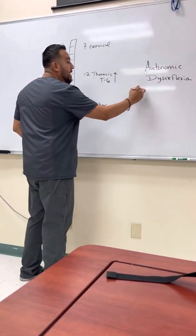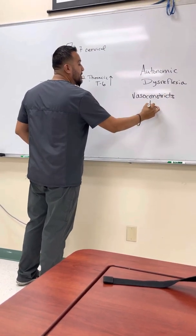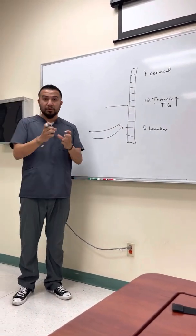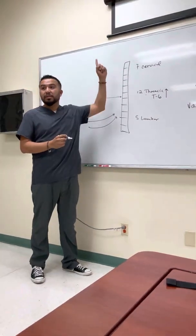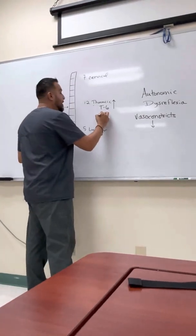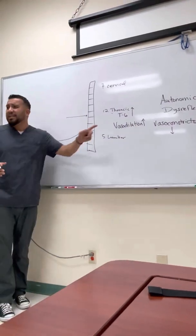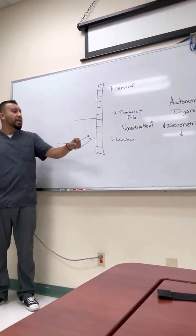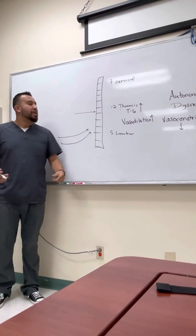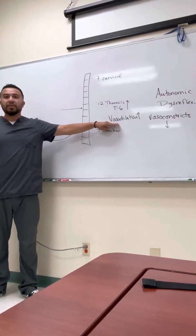What it does is vasoconstrict below the level of the injury. Let's say the injury is at T6 — all the blood vessels below T6 vasoconstrict, and they essentially shunt all the blood to the top. The patient's face becomes really red because you have vasodilation above the level of the injury.